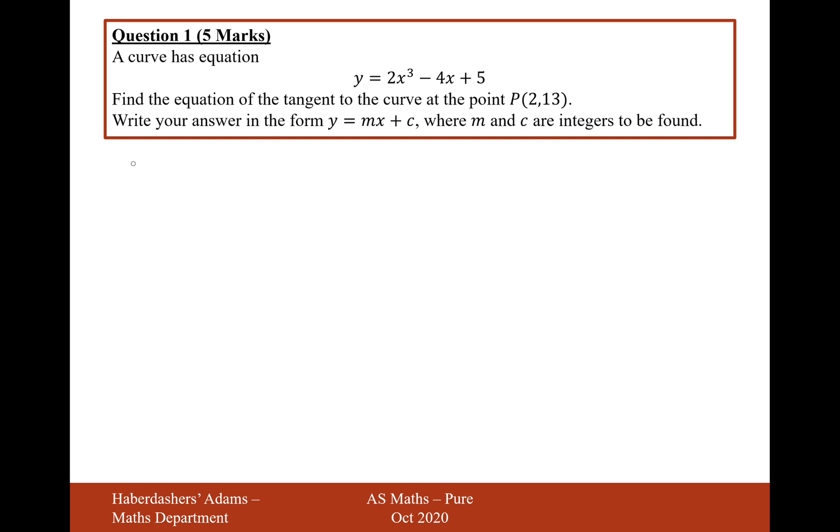Okay, so the first thing we need to do when we're finding a tangent is differentiate. So it's going to be dy by dx. Now what we do is we multiply the power to the front and reduce the power by 1. So it's going to be 6x squared minus 4, and then the plus 5 just kind of disappears.